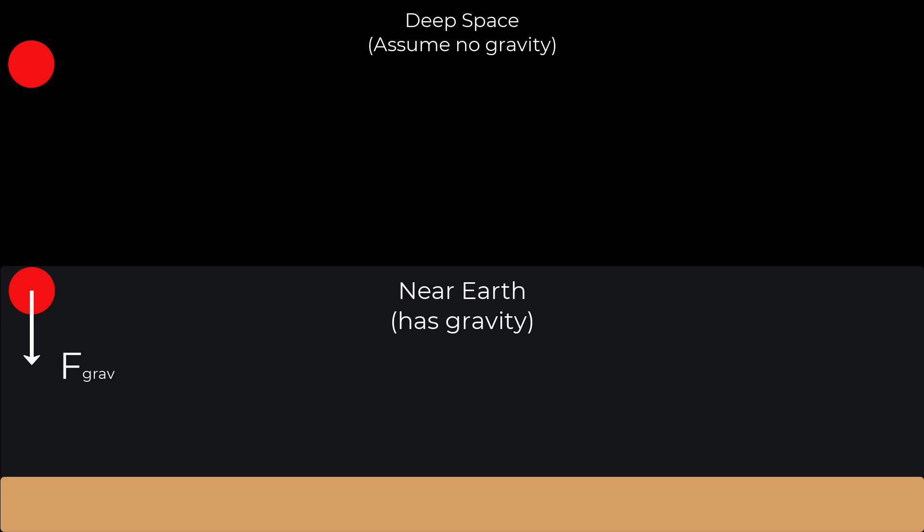Now imagine it was thrown near Earth where there is gravity. We'll ignore air resistance so horizontally it would do the same thing as before and keep moving at the same velocity since nothing is stopping it. The difference now is that gravity is pulling it down at the same time so while it moves forward it's also moving down towards the planet.